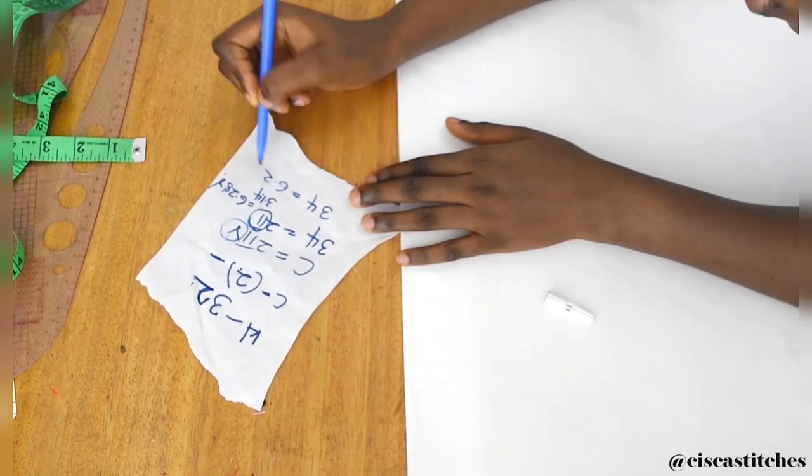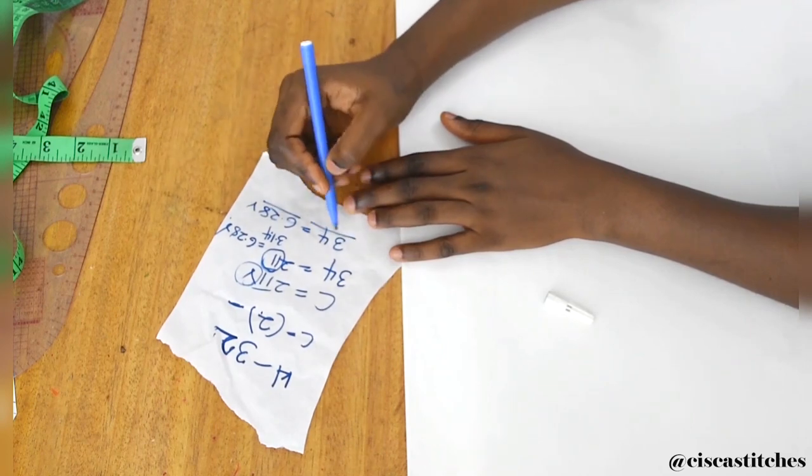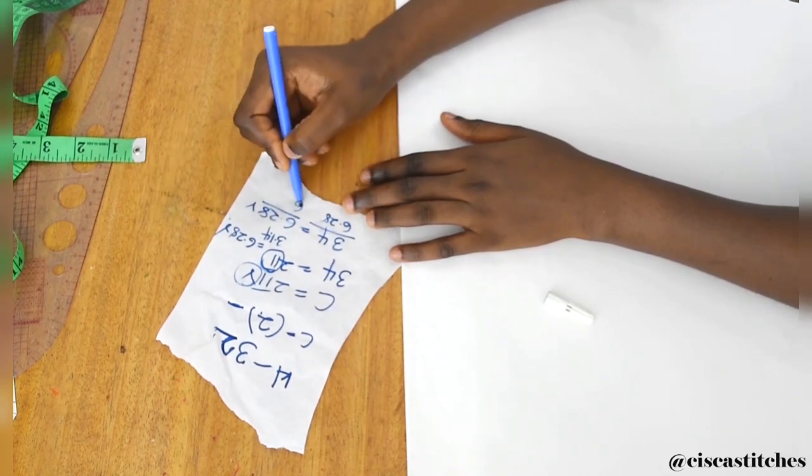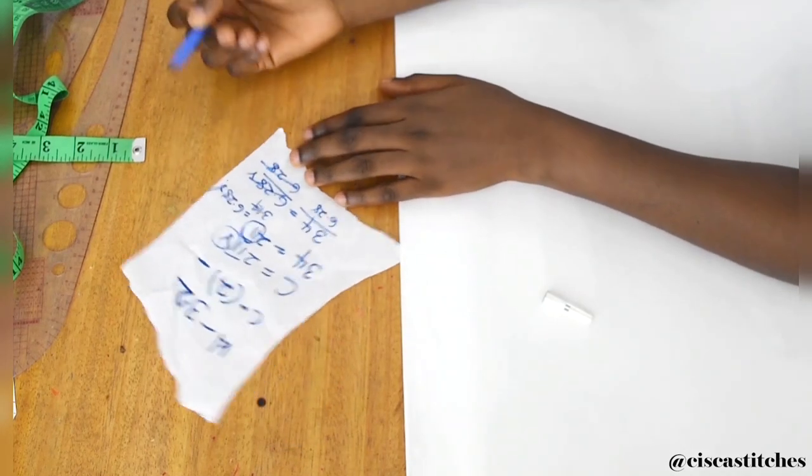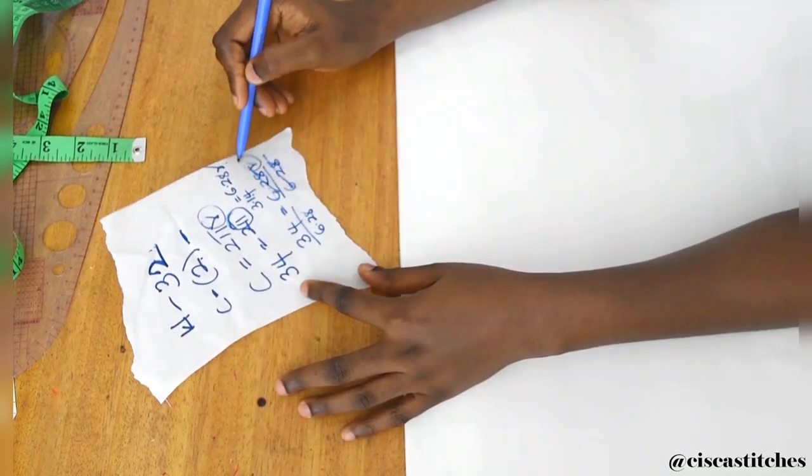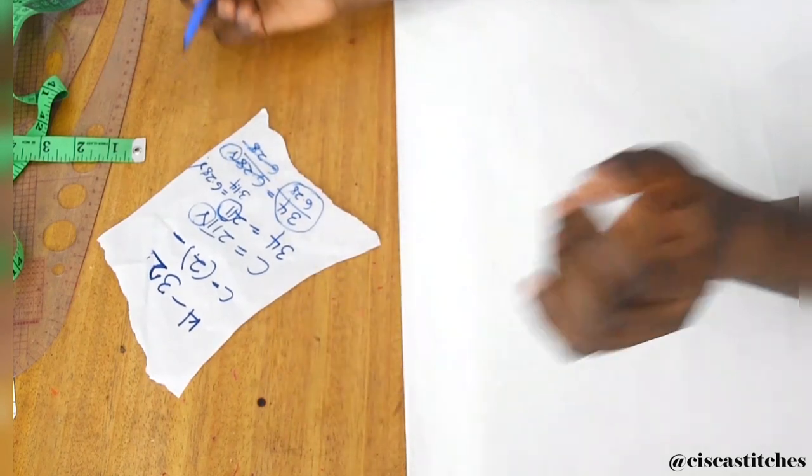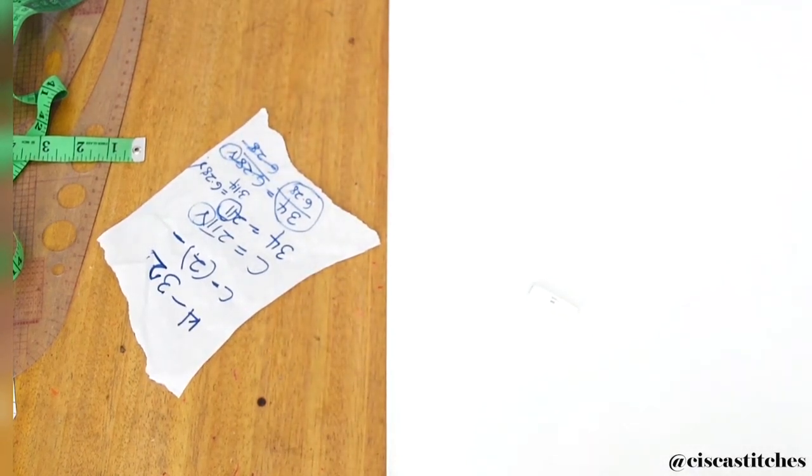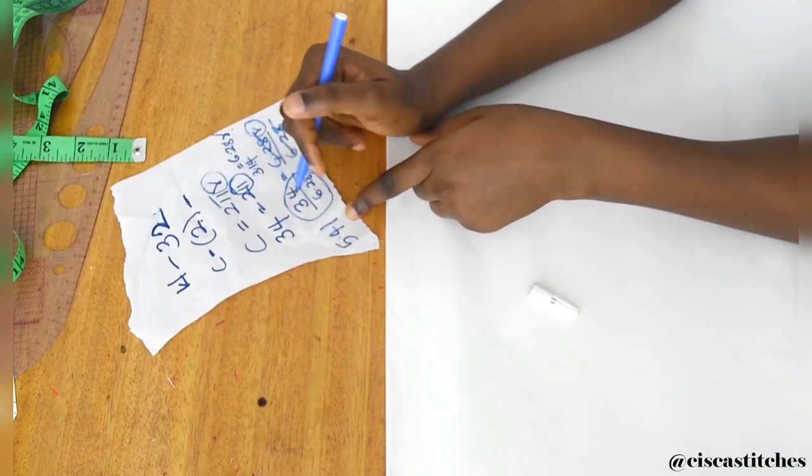I'm going to do 34 equals 6.28r. I'm going to divide both sides by 6.28 because we want to cancel 6.28 out on this side to get our radius. What I need for my radius now is 34 divided by 6.28, and by the time we calculate it we are going to get 5.41.